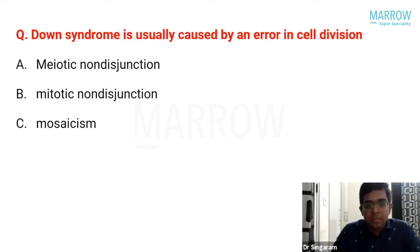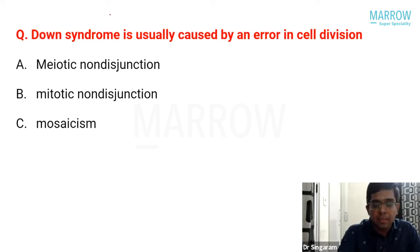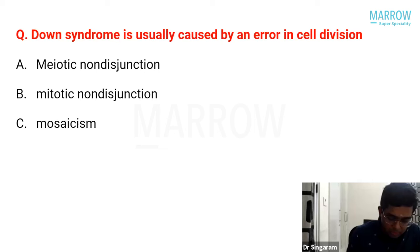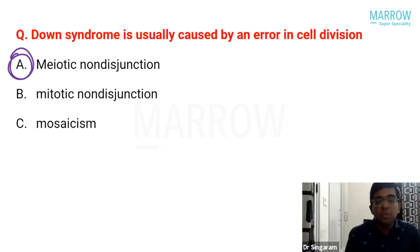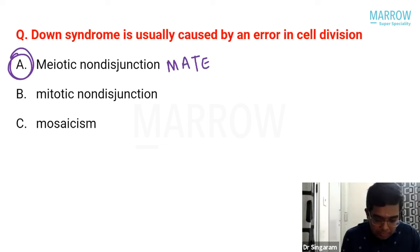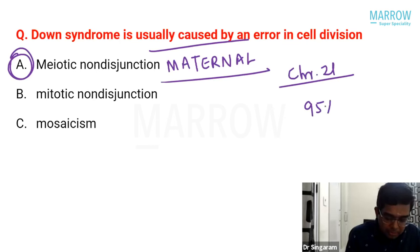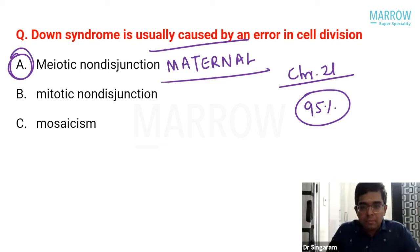Down syndrome questions were well represented in this exam. Down syndrome is usually caused by meiotic nondisjunction, a straightforward and repeatedly asked question. It is maternal meiotic nondisjunction involving chromosome 21, accounting for 95% of cases. The next Down syndrome question was more in-depth, asking about counseling risk when a parent carries a Robertsonian translocation.